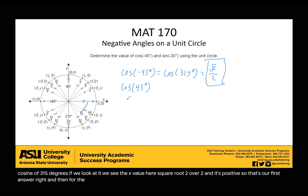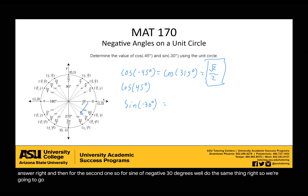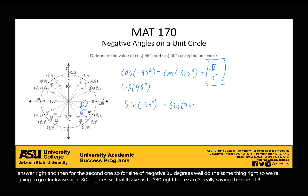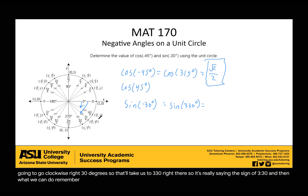For the second example — sine of negative 30 degrees — we'll do the same thing. We're going to go clockwise 30 degrees, which takes us to 330. So it's really saying the sine of 330. Remember, we're looking for sine, so that's going to be the y-value, which is negative one-half.